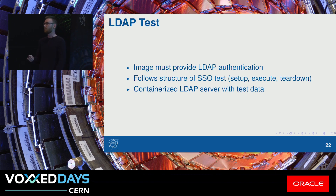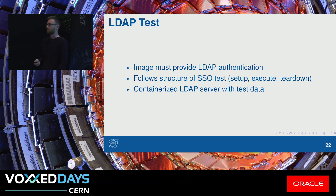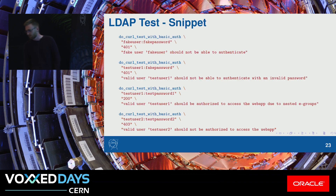And then there's the LDAP test. Our image needs to provide LDAP authentication for some older applications that will be running in it. It's done in the same way as the SSO test, except instead of spinning up our own identity provider, we spin up our own LDAP server with test data. So we isolate ourselves from the central CERN LDAP server. A fake user with a fake password should get a 401; a real user with a real password should get a 200. And this is just bash — you can barely tell.